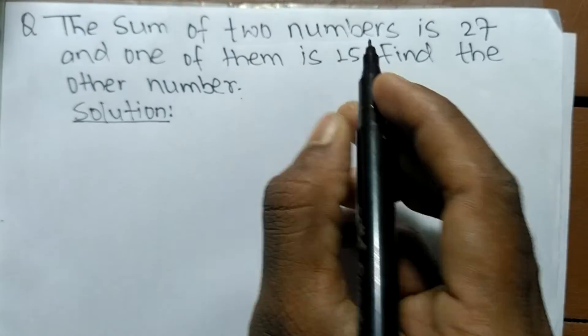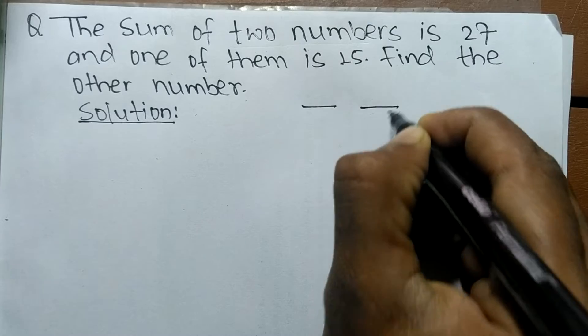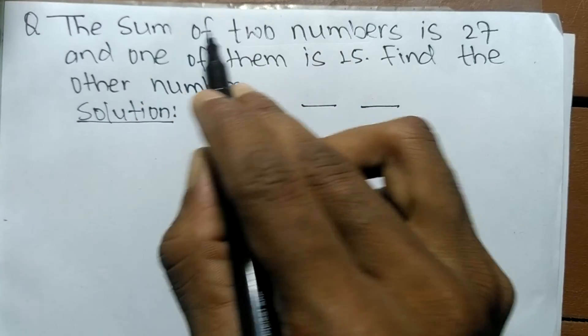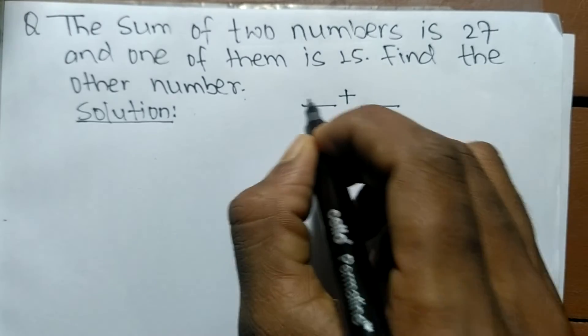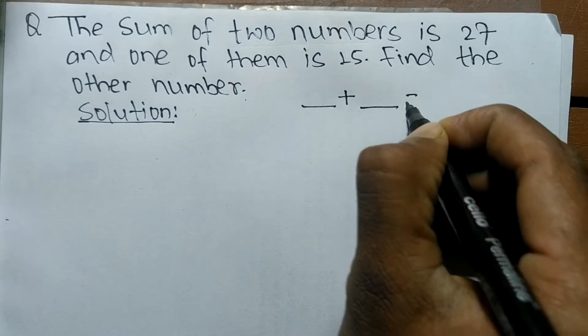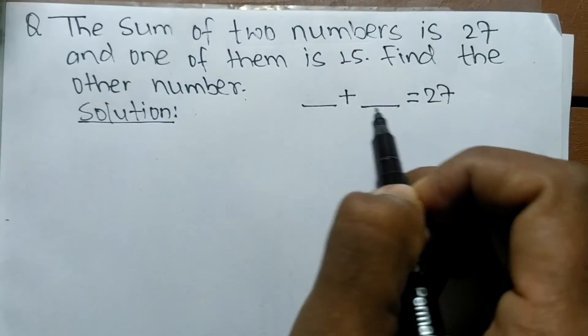According to the question, there are two numbers. Suppose this one is one number and this one is the second. The sum of two numbers means addition, so the sum of two numbers is equal to 27.